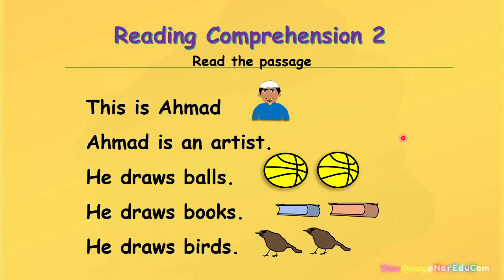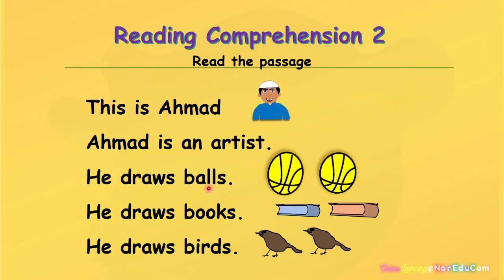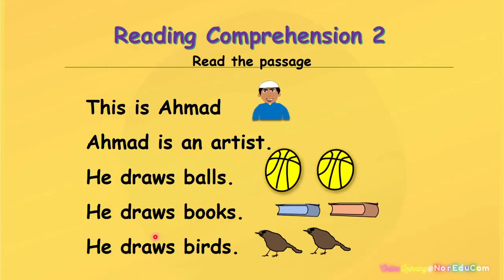Now let's go to reading comprehension 2. Let's read the passage together. This is Ahmad. Ahmad is an artist. He draws balls. He draws books. He draws birds.